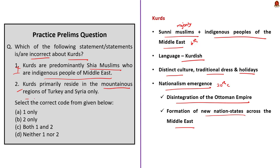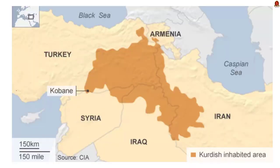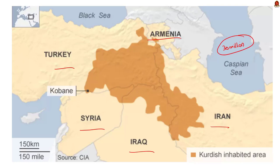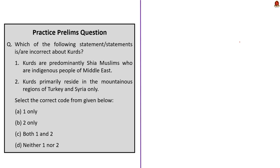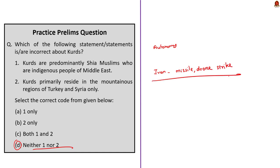Statement 2 says Kurds primarily reside in mountainous regions of Turkey and Syria only — this is also incorrect. Kurds are indigenous to the Mesopotamian plains and highlands and are spread as minorities in southeastern Turkey, northeastern Syria, northern Iraq, northwestern Iran and southwestern Armenia. An estimated 30 million Kurds reside primarily in the mountainous regions of present-day Iran, Iraq, Syria and Turkey. They remain one of the world's largest peoples without a sovereign state. The correct answer is option D — neither 1 nor 2. This question was framed because in November, Iran launched cross-border missile and drone strikes against Kurdish opposition groups in northern Iraq.